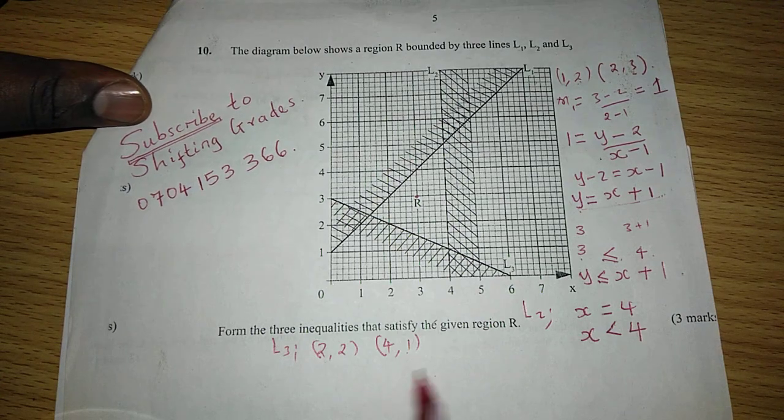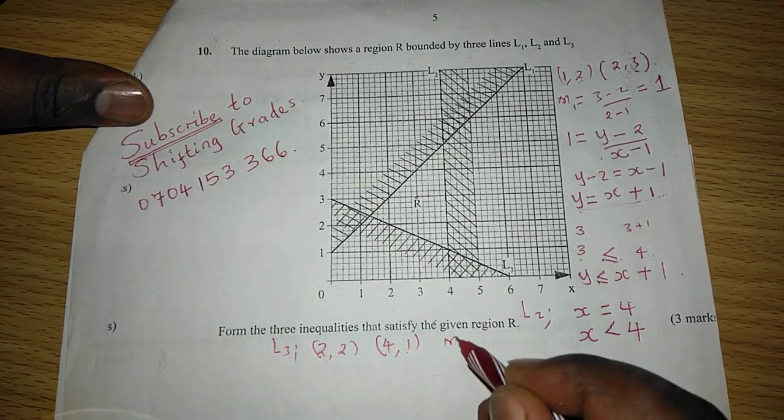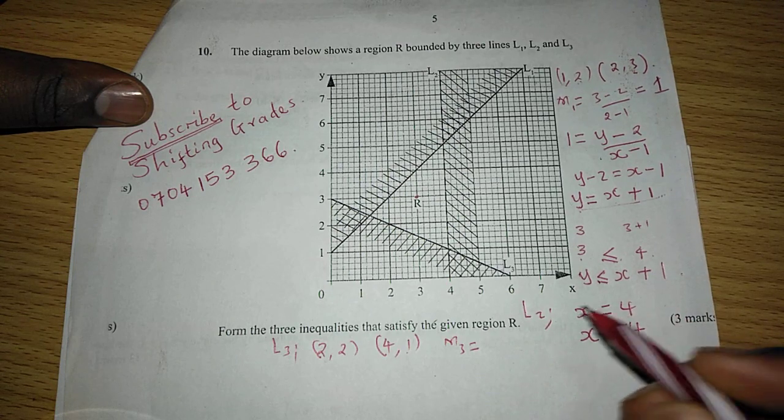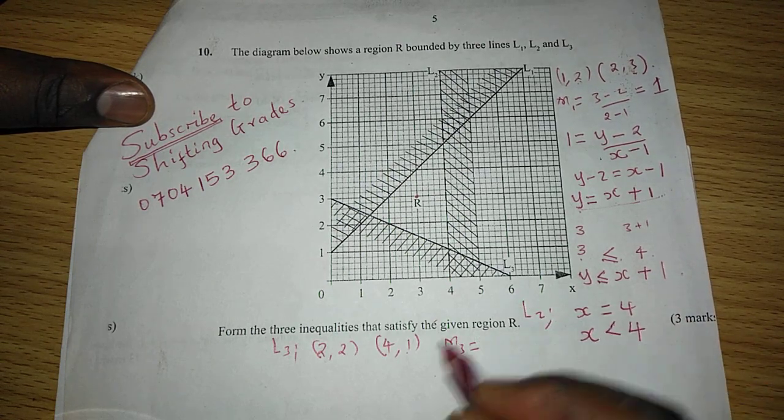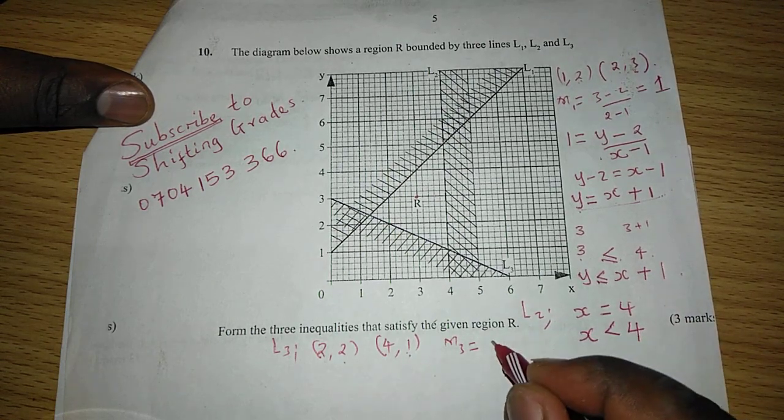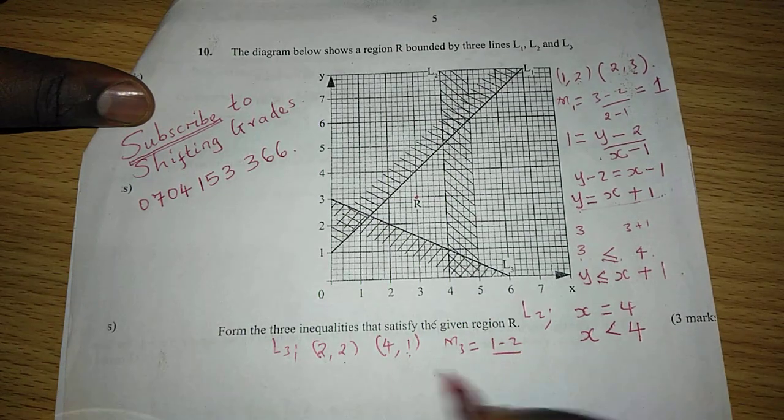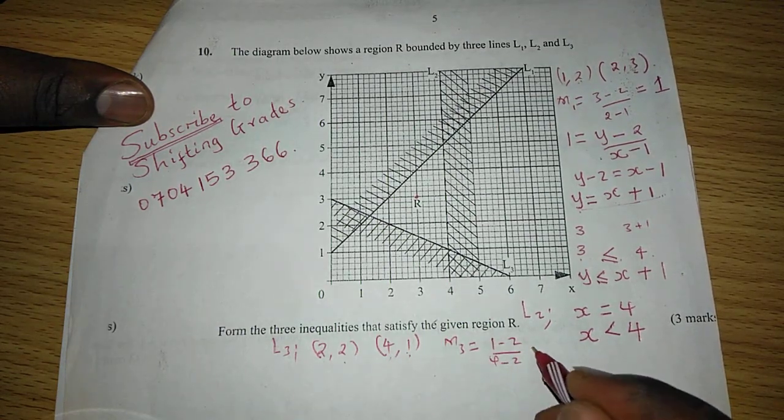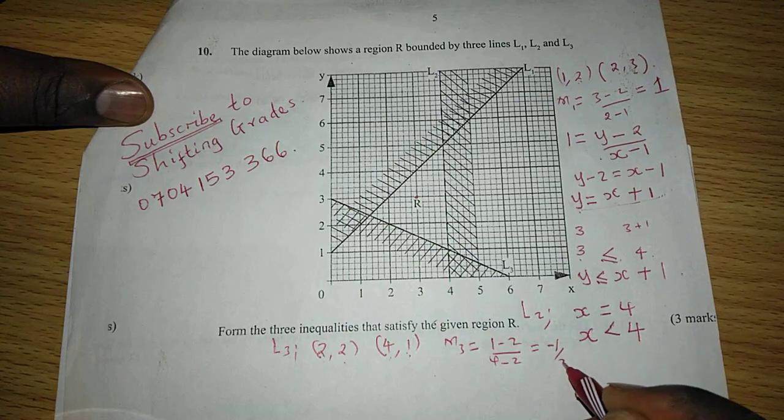So with these two coordinates, we can get gradient of that line, M3, which will be given by 1 minus 2, divided by 4 minus 2. And this will be negative 1 out of 2. So the gradient is negative half.